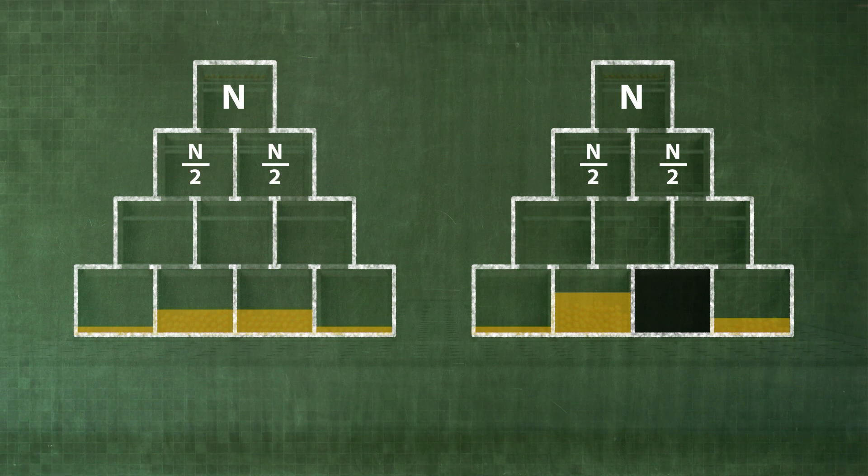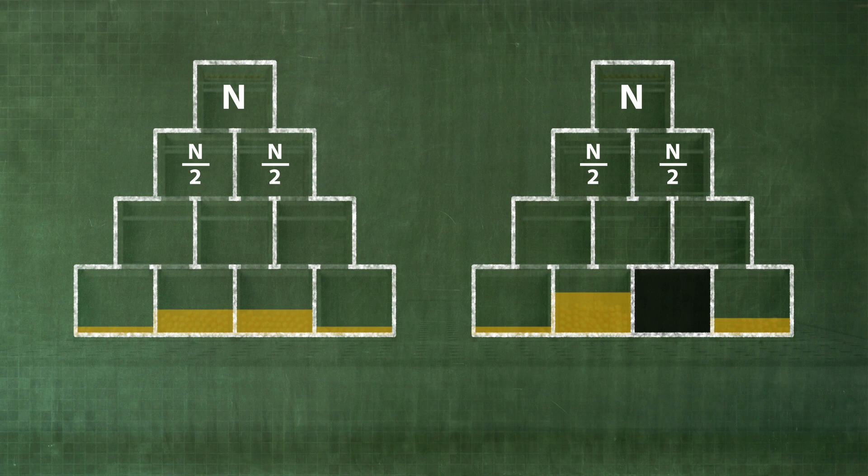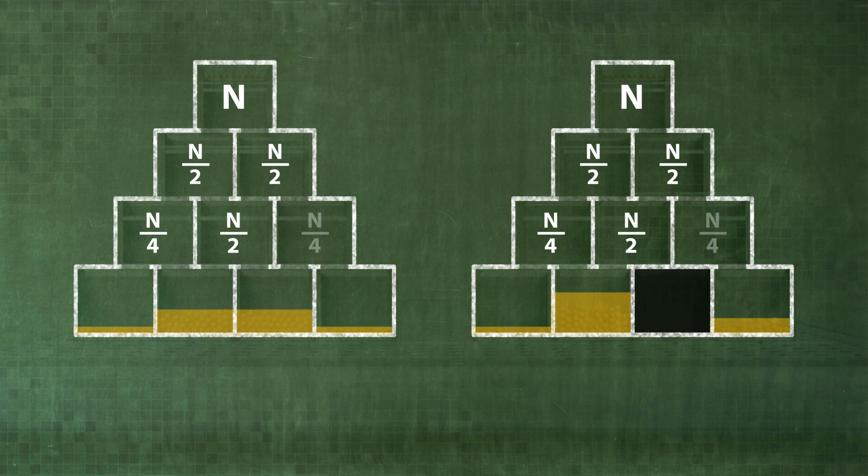For level 2, the ball distribution is still the same for both pyramids, namely n fourths, n half, n fourths.